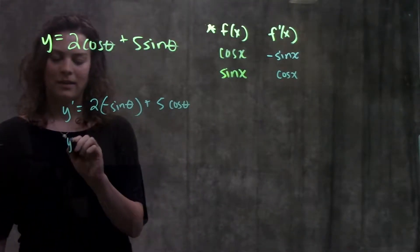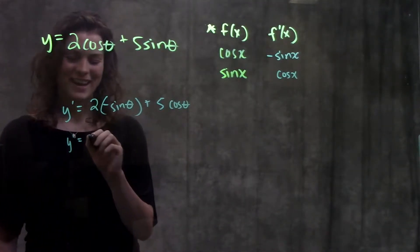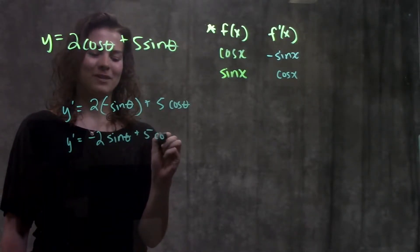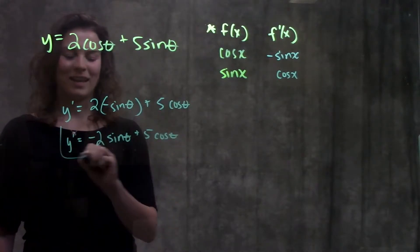Let me clean up my negative signs. This becomes minus two sine theta plus five cosine theta. And that's your final answer.